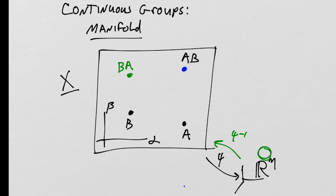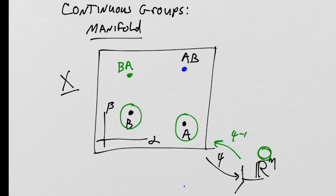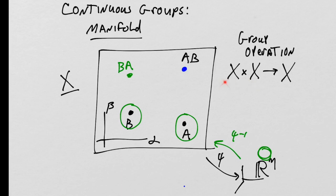Isomorphisms are bijective and continuous in both directions, so ψ-inverse exists and is continuous. ψ-inverse takes open sets in R^n — for which a basis is the open balls — and maps those open sets back to open sets in the manifold. Whatever the topology of the manifold is, its open sets must be the pre-images of the simple open sets in R^n. This allows us to create open neighborhoods around any two points.